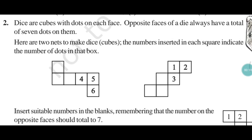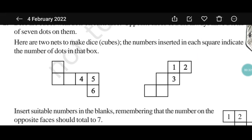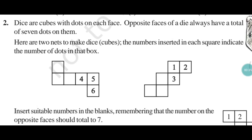Now this is question number 2. Dice are cubes with dots on each face. Opposite faces of a die always have a total of 7 dots on them. Here are two nets to make dice. The numbers inserted in each square indicate the number of dots in that box. We know that the total of opposite faces of a die is 7, and we have to fill the given faces so that the sum becomes 7 to show accurate dice.